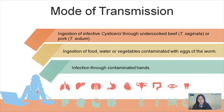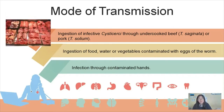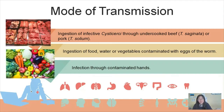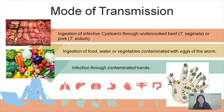Mode of transmission of teniasis: it can be transmitted through ingestion of infective cysticerci through undercooked beef — Tenia saginata — or pork — Tenia solium. It can also be transmitted through ingestion of food, water, or vegetables contaminated with eggs of the worm, and through infection via contaminated hands.